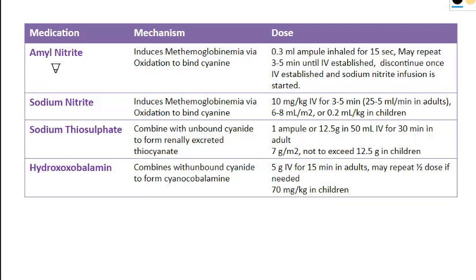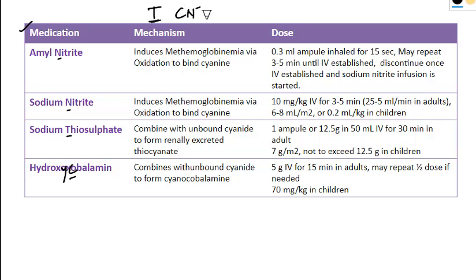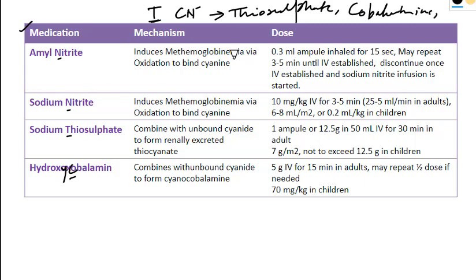Let us first start with the treatment. In the Cyanokit, you get these molecules: nitrite compound, thiosulfate compound, and hydroxocobalamin. My simple mnemonic to remember the treatment is 'treat cyanide poisoning' — T for thiosulfate, C for cobalamin, and N for nitrite. Just remember these three molecules: thiosulfate, cobalamin, and nitrite. These are the three molecules utilized for treatment.